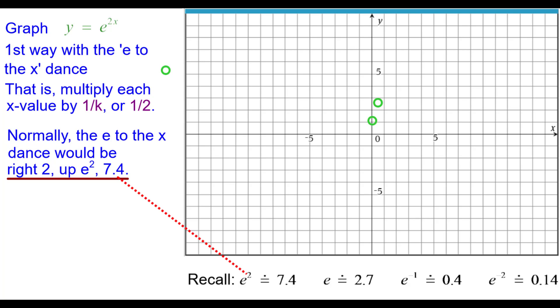Normally we go right 2 up e squared, but in this case it is going to be right 1 up e squared, because a half times 2 is 1. So right 1 up 7.4.